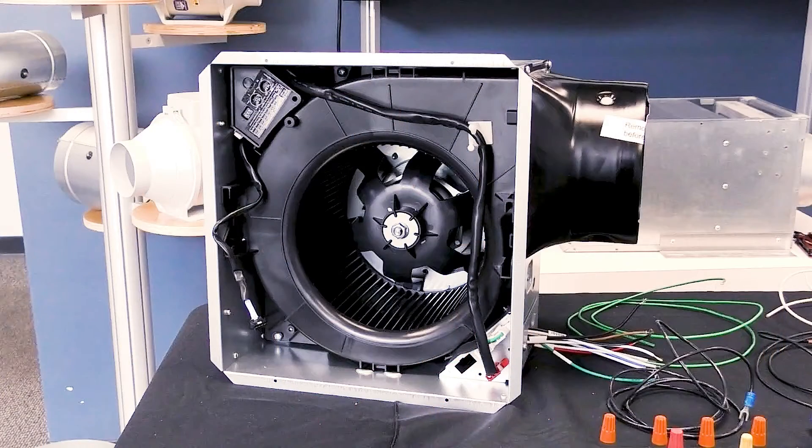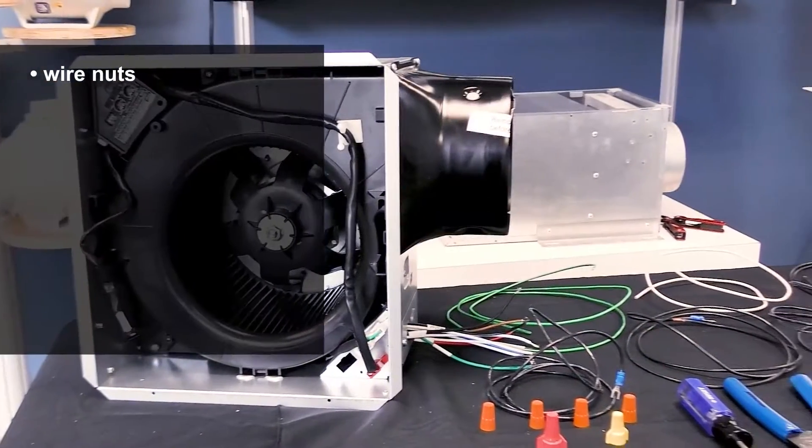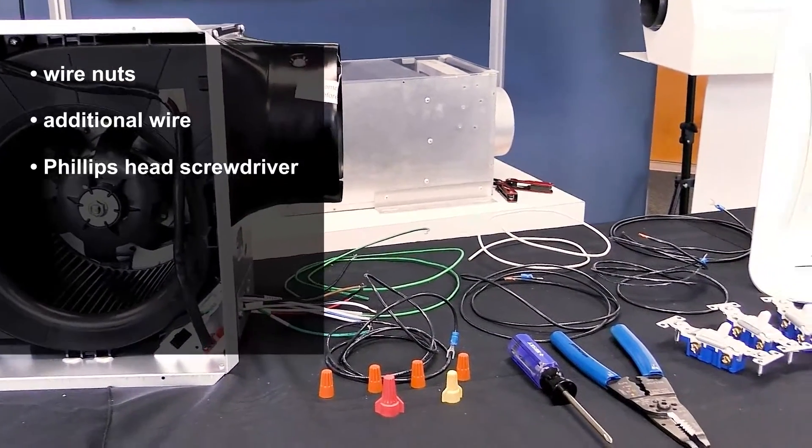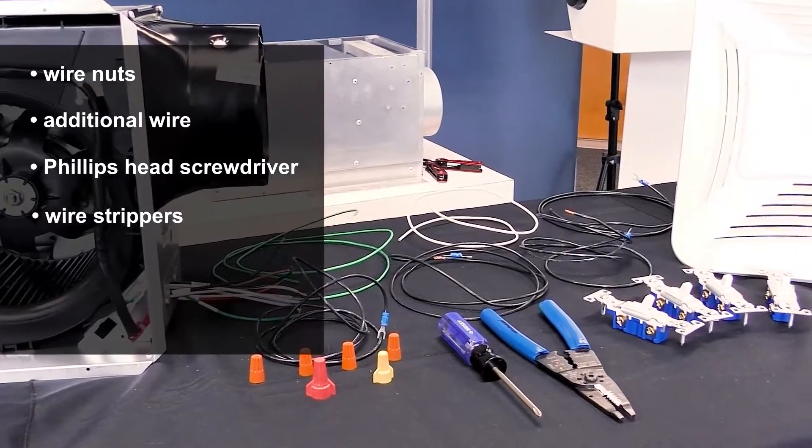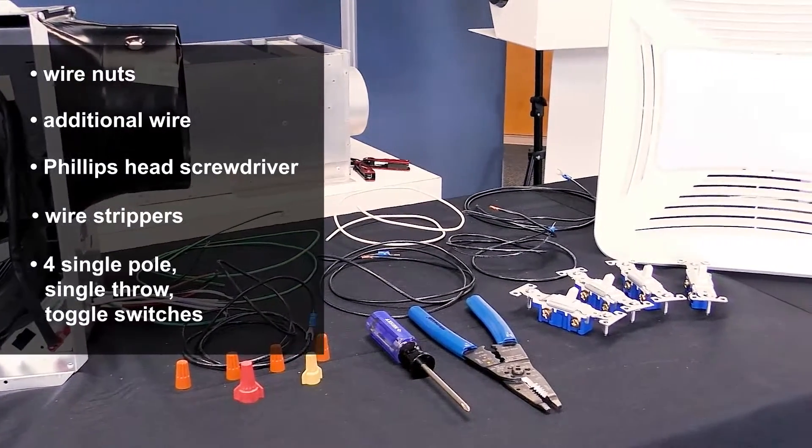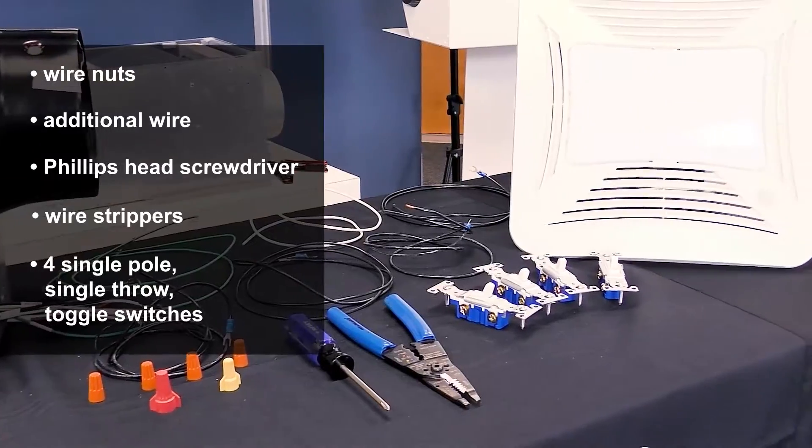First, gather your supplies including your premium choice AC model fan with PCLMHKP plug-and-play sensor pre-installed, wire nuts, additional wire, a Phillips head screwdriver, wire strippers, four single-pole, single-throw toggle switches.